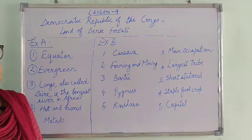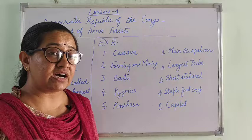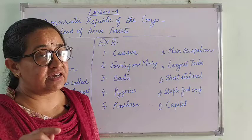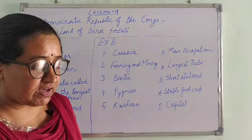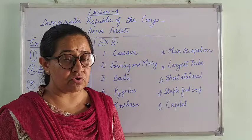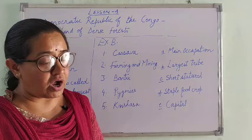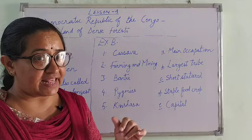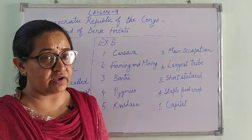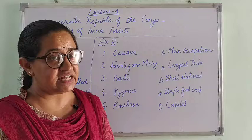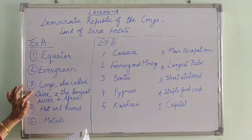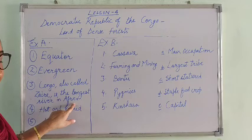Question 3: Choose the incorrect statement. Among the options, we need to find the wrong statement. Statement one — River Congo is an important feature of Democratic Republic of Congo — this is correct. Statement two — Congo, also called Zaire, is the longest river in Africa — this is wrong, Congo is the second longest river, not the longest. So tick Option B for the third answer.